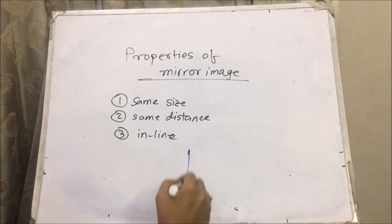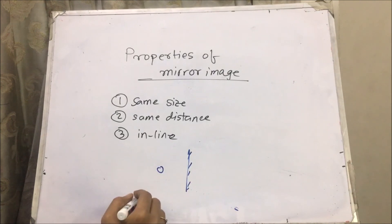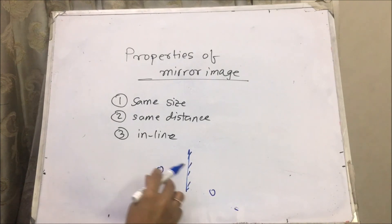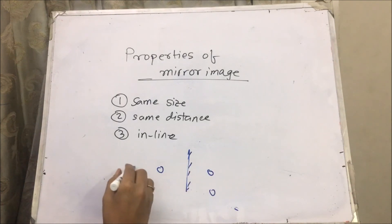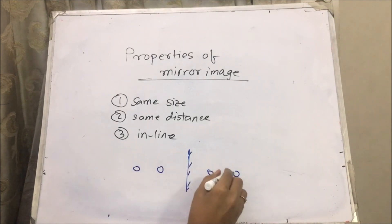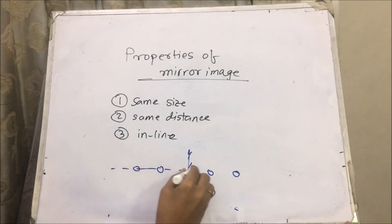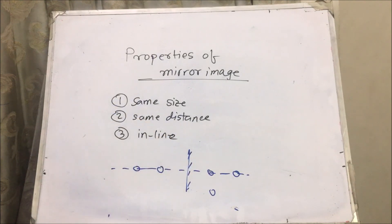In line: imagine here is a mirror and here you are standing. You won't see your picture somewhere off to the side — if you're standing here, your picture will be here directly opposite. It is in the same straight line. That is what 'in line' means.